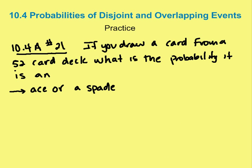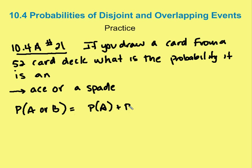In the next problem, we have a 52-card deck and we want to find the probability that a card drawn is an ace or a spade. We set up the equation: P(A or B) = P(A) + P(B) − P(A and B).